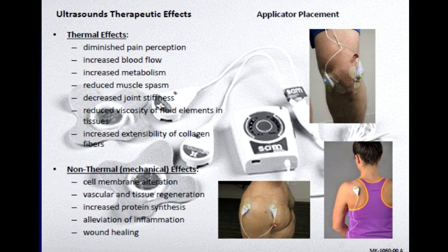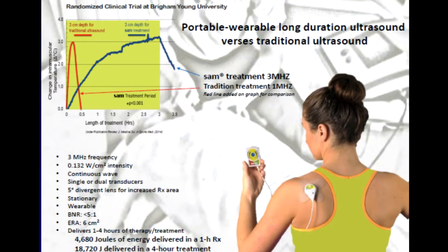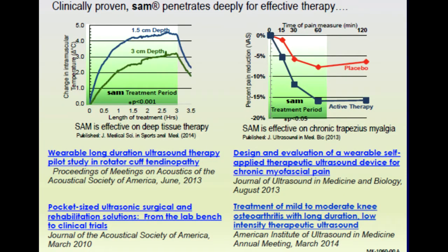There's a graph comparing the SAM unit at three megahertz versus traditional ultrasound at one megahertz. With the SAM device, over a longer duration — two to three hours — you can see significant changes in intramuscular temperature. With a traditional sound head, you get a temperature rise but it's very short-lived, about half an hour. With the SAM device you can sustain that effect for two, three, or four hours at a time, which is a very unique situation.